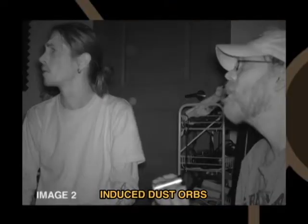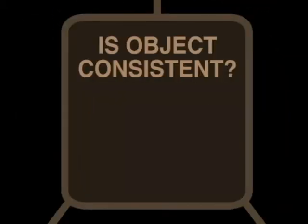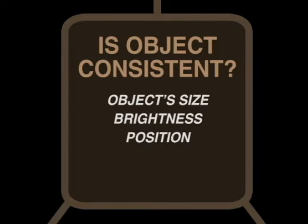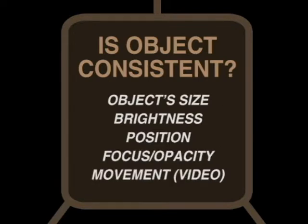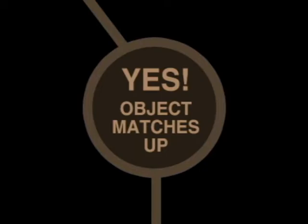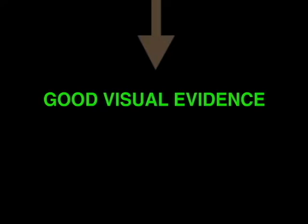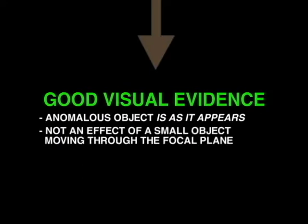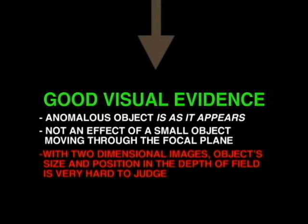If you got it on more than one frame, does it match? We look at the object's size, brightness, position, focus, and opacity — and if it's on video, its motion. Is the object consistent? If it doesn't match up, it could be a focal effect. However, if it matches up, we see this as good visual evidence — we know the object is as it appears and not just a focal effect. However, you really can't tell its size or its position in the field of view by this method, which is why it's only good evidence.